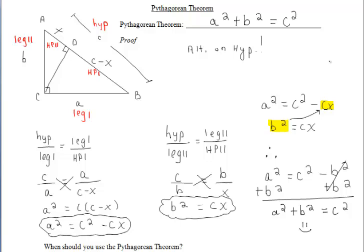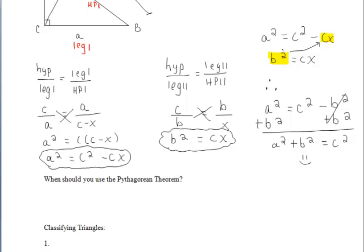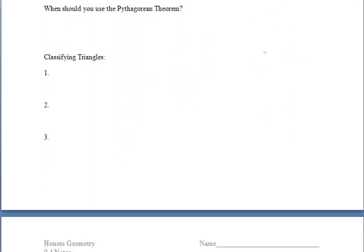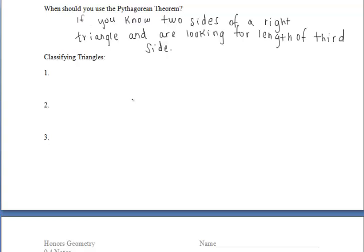We can also use the Pythagorean theorem to help us work backwards to determine what different types of triangles we're working with. We can use the Pythagorean theorem to see if a triangle is acute, right, or obtuse. But in general, we use the Pythagorean theorem if we have a right triangle and we know two sides of the right triangle, and we're looking for the length of the third side.